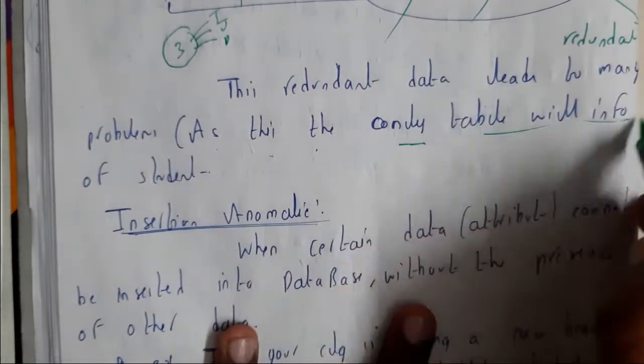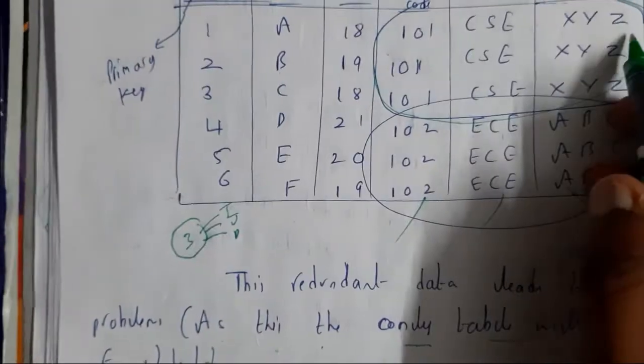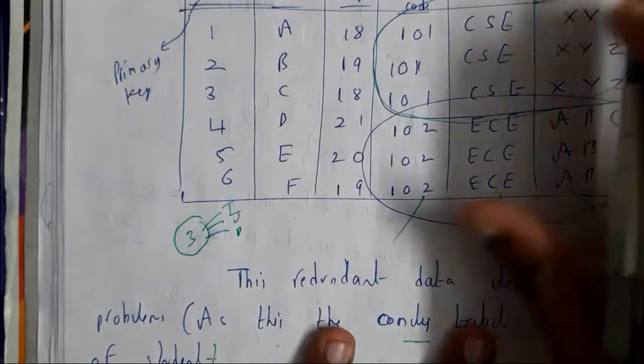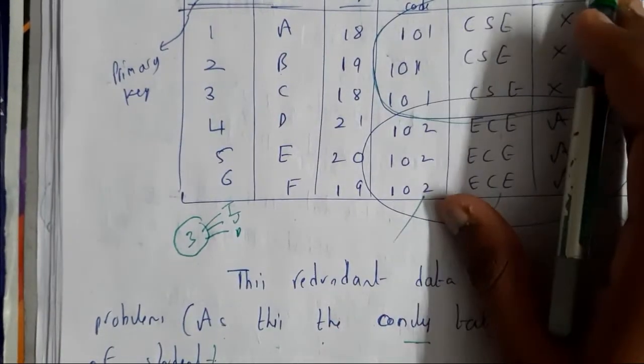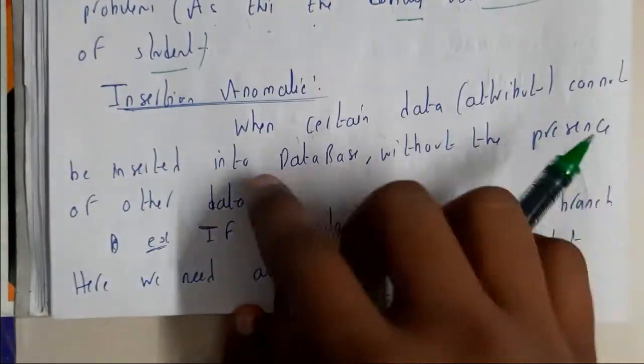As this is the only table with the information of students, we will be considering this table is the ultimate table for the student. In that way, we will be facing three issues, that is insertion anomaly.